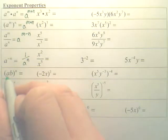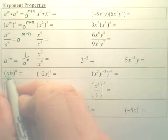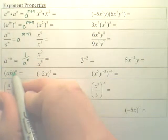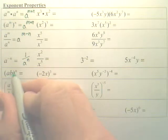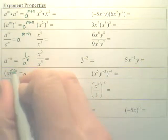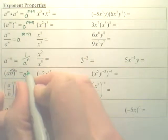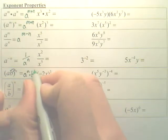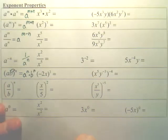Anytime you have two things multiplied to one power, that power is going to distribute to both pieces. So basically this N goes to both pieces. So you have A to the nth times B to the nth. The nth power goes to both pieces.